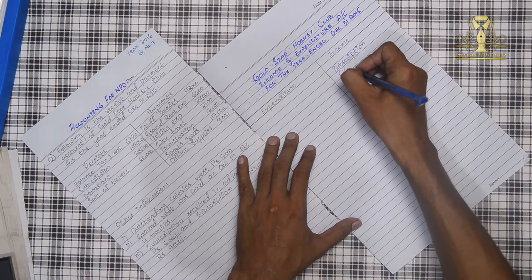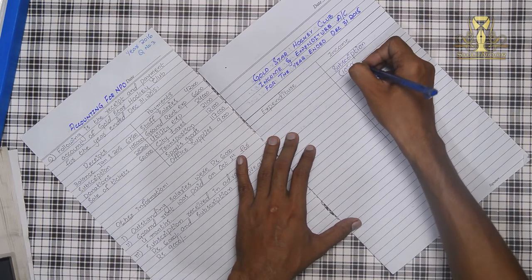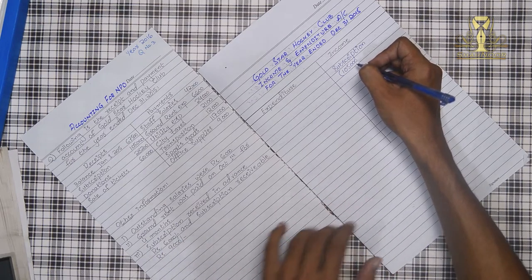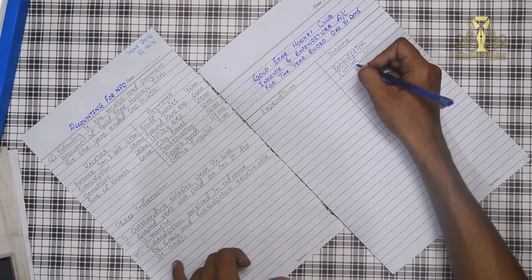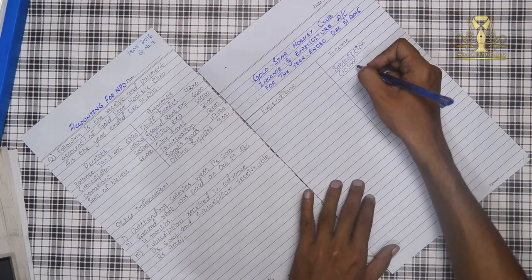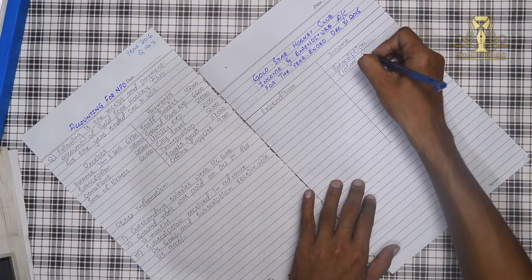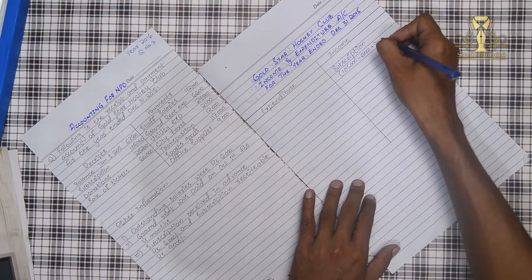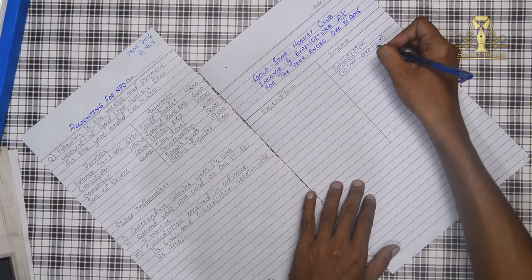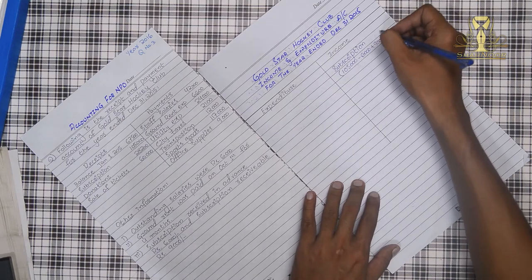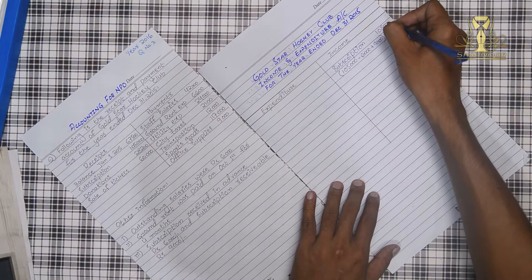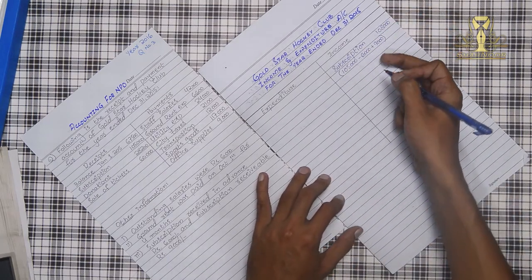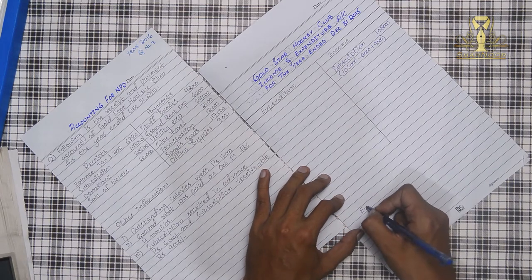The subscription amount is $105,000. In the additional information, they have the subscription detail. We have a subscription amount received in advance. We will add the advance subscription. Why did I add it? Let's understand.